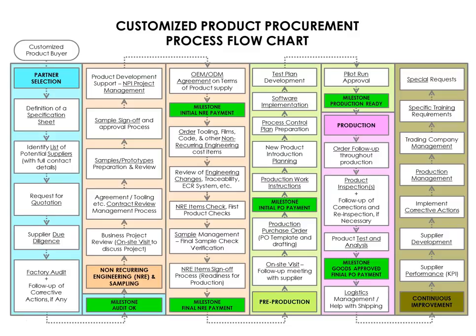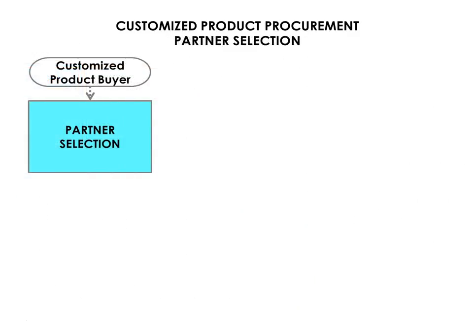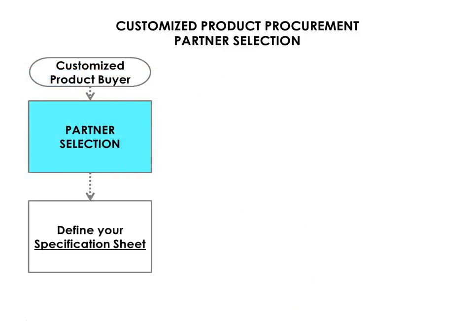Let's look at the Partner Selection phase. Initially, you'll need to define your product specification sheet. The purpose of this document is to provide information to a manufacturer on what is being produced and the specific requirements associated with each aspect of the design.